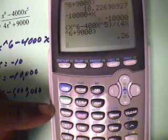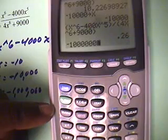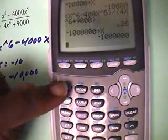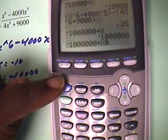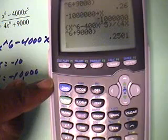Okay, well let's go up to a million now, negative 1, 0, 0, 0, 0, 0, 0, store that into x. Okay, and now we're going to bring up the equation again, there we go, now press enter. And 0.2501.